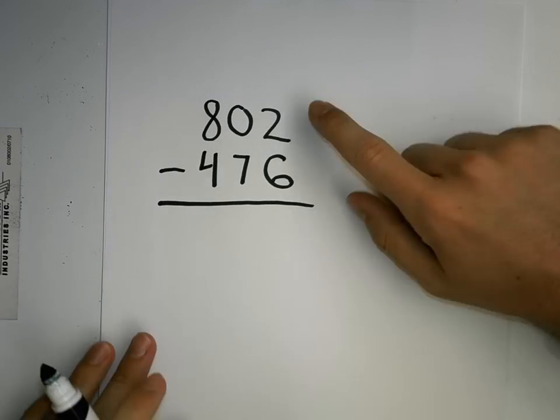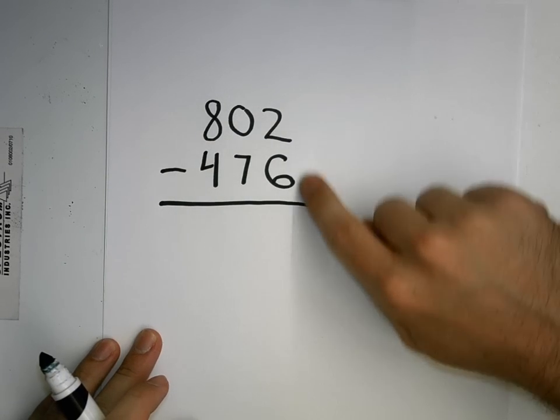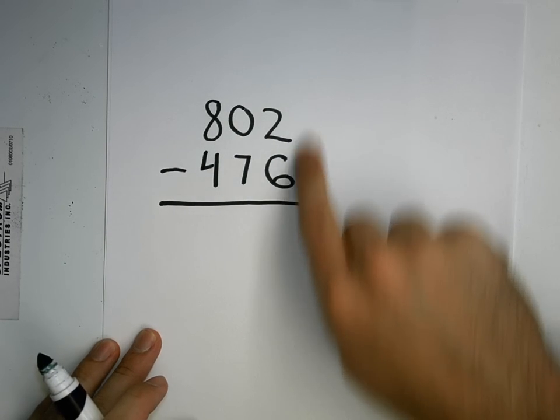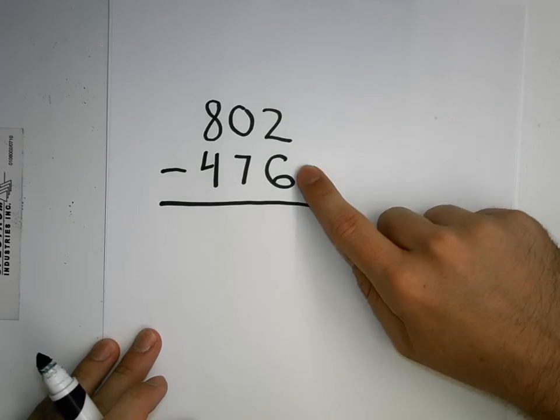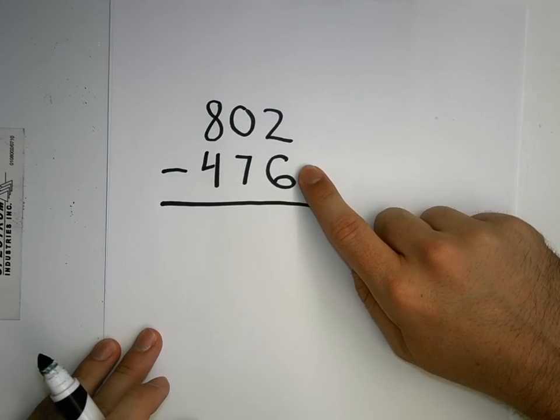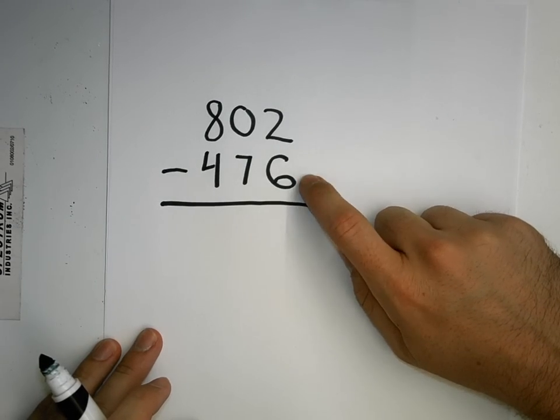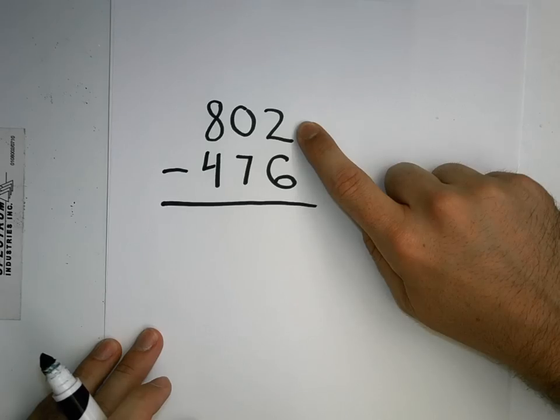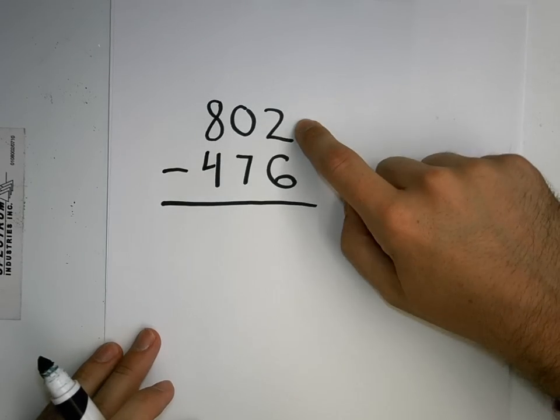So when I first look at my ones digits, because you always start with your ones place, if I have two, I can't take away six. The six digit is bigger than the two digit, so I have to regroup.